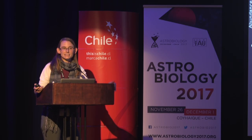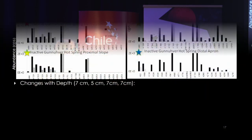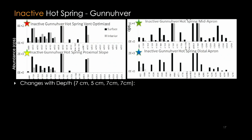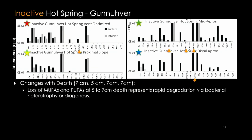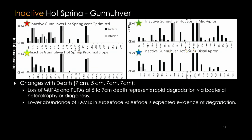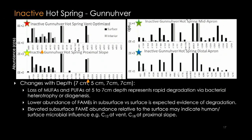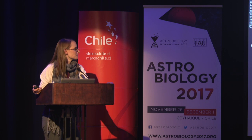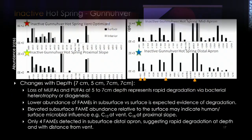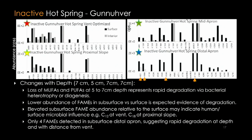Looking at these samples at depth — about 7 centimeters — we again see loss of mono and polyunsaturated fatty acids at just a few centimeters depth, indicating rapid degradation, and a lower overall abundance of FAMEs in the subsurface versus the surface. Elevated subsurface FAME abundance relative to the surface in some examples, like C12 at the vent and C18 at the proximal slope, may indicate human or surface microbial communities influencing the system not native to the hot spring. In the distal apron subsurface, only four FAMEs were detected, again showing rapid degradation both in the subsurface and downgradient from the vent.